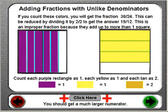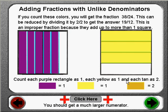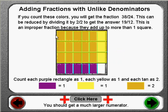Here is the second and last addition problem which I would like you to prove its step-by-step conversion process using pencil and paper. Before you are the fractions five-sixths and three-fourths. After clicking the 'click here' button, one can see that they merge to form the fraction thirty-eight twenty-fourths. It is equal to thirty-eight twenty-fourths because there are fifteen tans — each tan represents two.